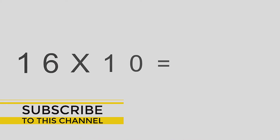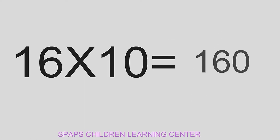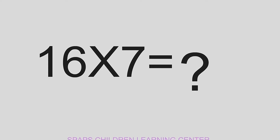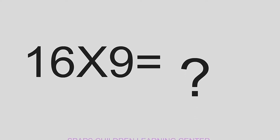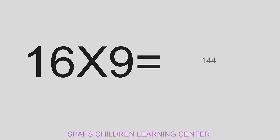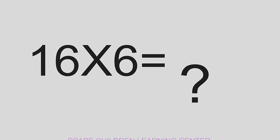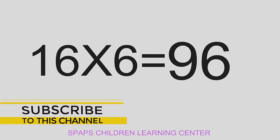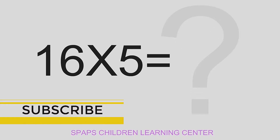16 times 10 equals 160. 16 times 7 equals 112. 16 times 9 equals 144. 16 times 6 equals 96. 16 times 5 equals 80.